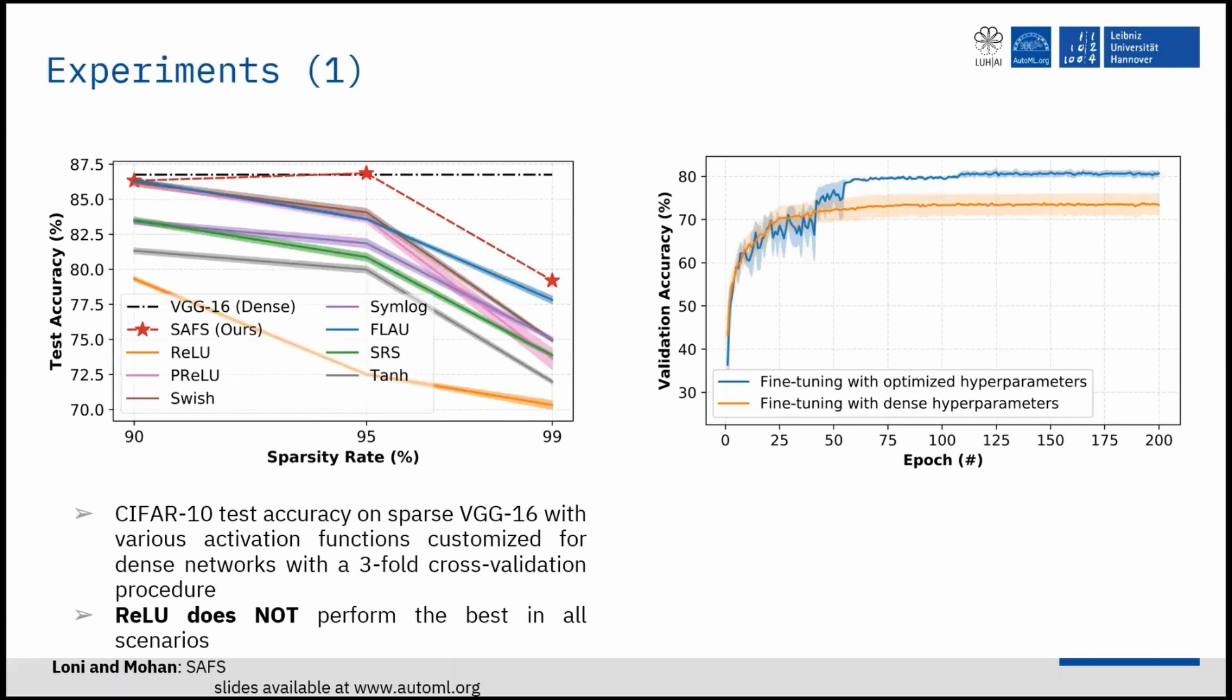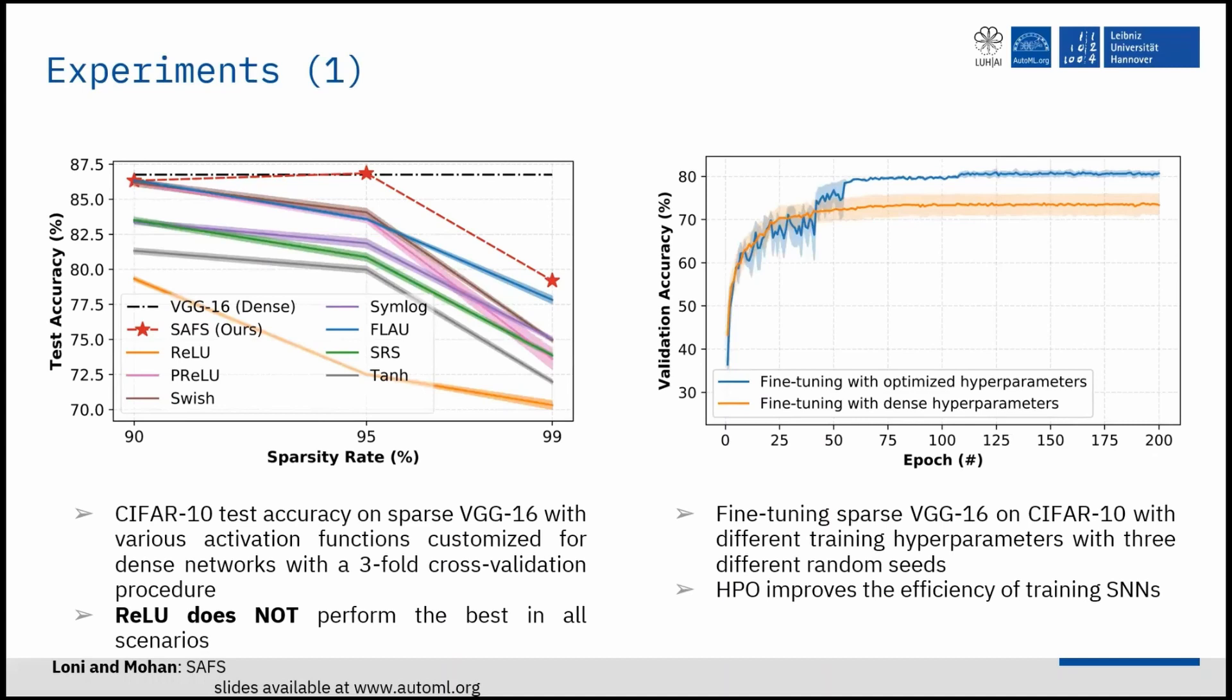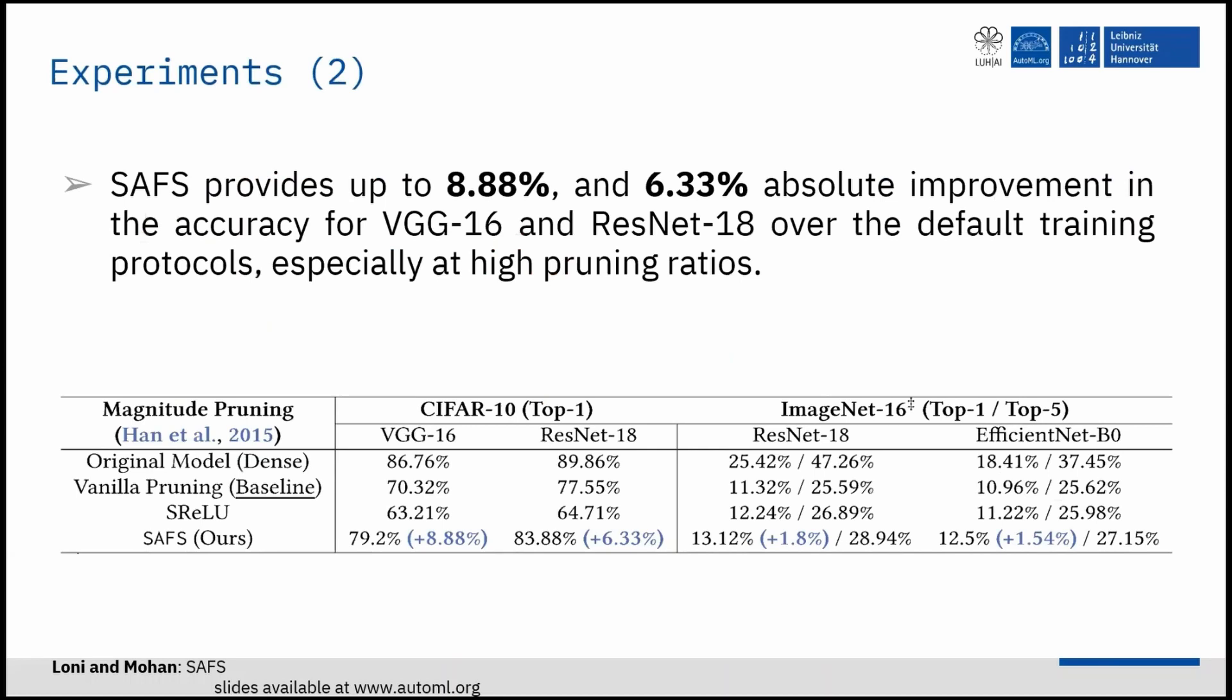Second, we compare fine-tuning sparse VGG-16 trained on CIFAR-10 dataset with the default and optimized hyperparameters. Results show that hyperparameter optimization significantly improves the efficiency of training sparse neural networks.